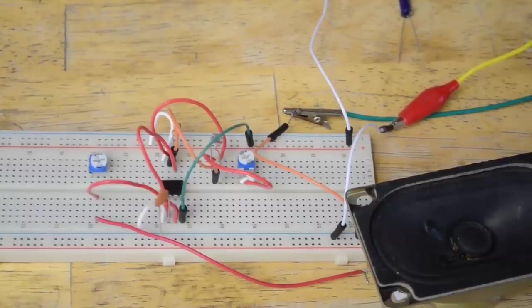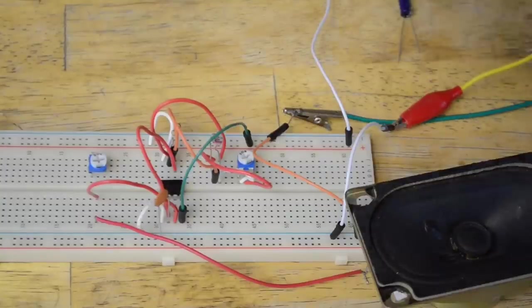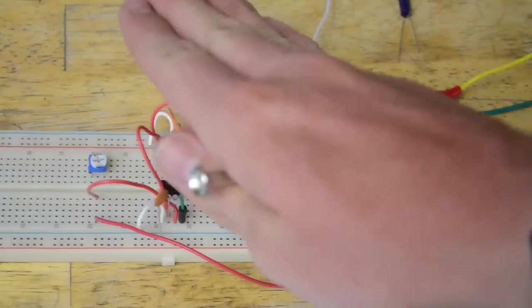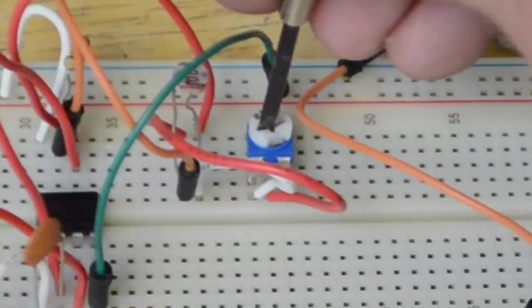Alright, so I have the speaker set up, let's go ahead and turn it on. As I move my hand closer to the photoresistor, the tune will get lower. But you can still tune it slightly with this potentiometer, as you can see.